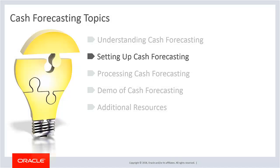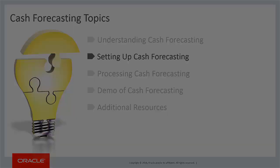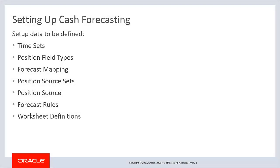Now that we understand what cash forecasting is, let's discuss how to set it up. Setting up cash forecasting includes defining cash forecasting information. The following set of data has to be defined. Time sets are used to configure time segments with corresponding start and end cycles. They also store associated time periods.